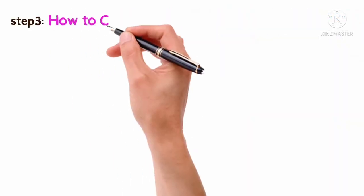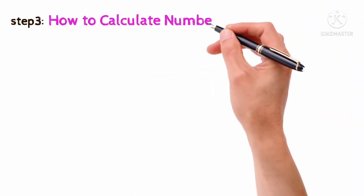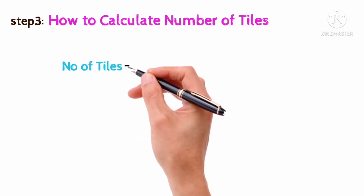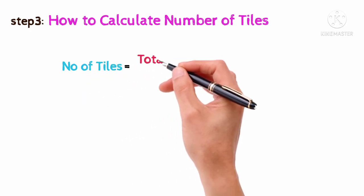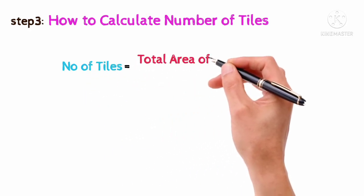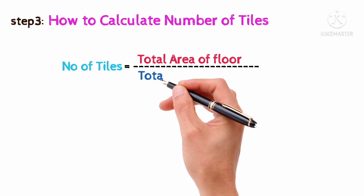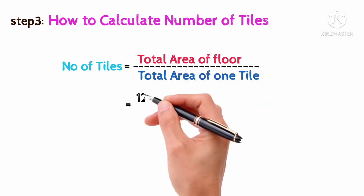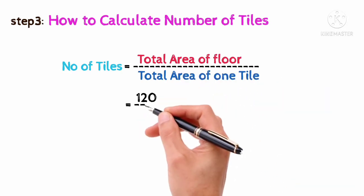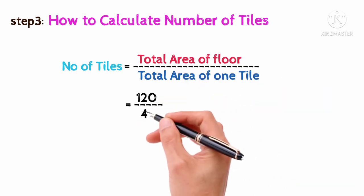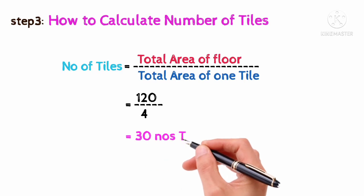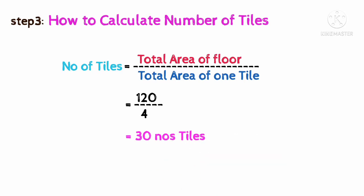Step 3: How to calculate the number of tiles. Number of tiles equals total area of floor divided by total area of one tile, equals 120 divided by 4, equals 30 numbers of tiles.